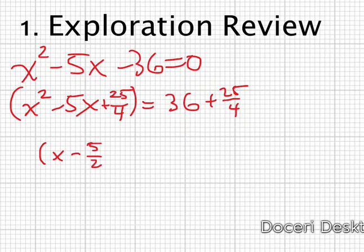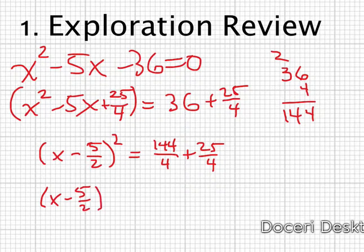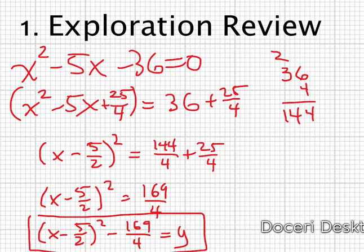So this gives me x minus 5 halves squared equal to 36 plus 25 over 4. I need a common denominator of 4. 36 times 4, that's going to be 144. So I have 144 over 4 plus 25 over 4, which gives me x minus 5 halves squared equal to 169 over 4, which I subtract from both sides to get 0. So I get x minus 5 halves squared minus 169 over 4 equals 0. And I can replace 0 with f of x or y. So my standard form of my equation is this.